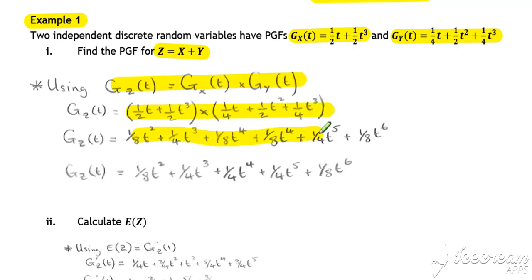So multiply your brackets and simplify and we end up with our new probability generating function.